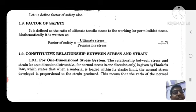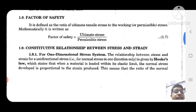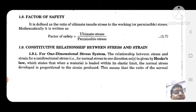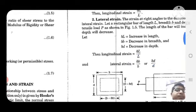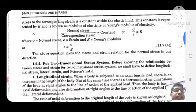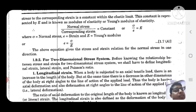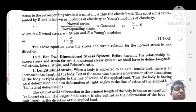Constitutive relationship between stress and strain for a one-dimensional stress system: the relationship for unidirectional normal stress in one direction only is given by Hooke's Law, which states that when a material is loaded within the elastic limit, the normal stress developed is proportional to the strain produced. This constant is represented by capital E, known as modulus of elasticity or Young's modulus. So E equals sigma divided by epsilon.